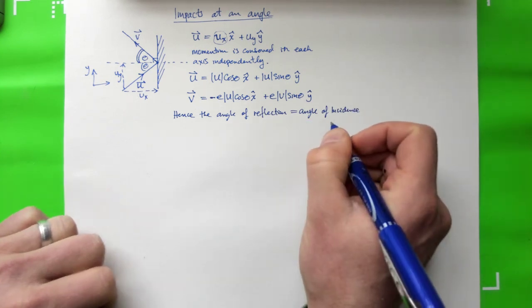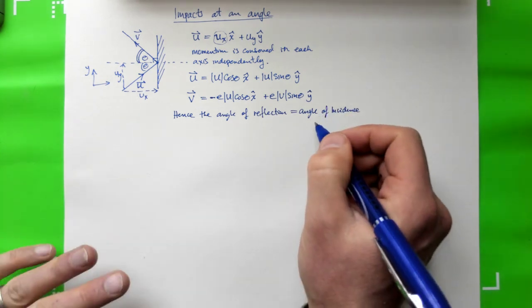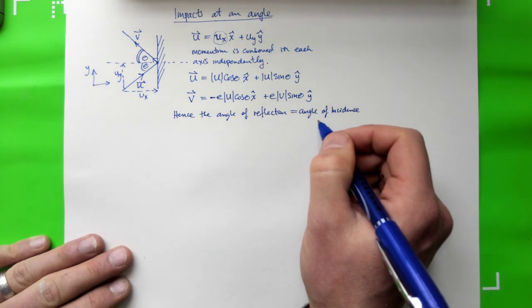So the angle of reflection is equal to the angle of incidence. And this is actually something you can remember because it also applies when you will deal with optics and light in a future course.